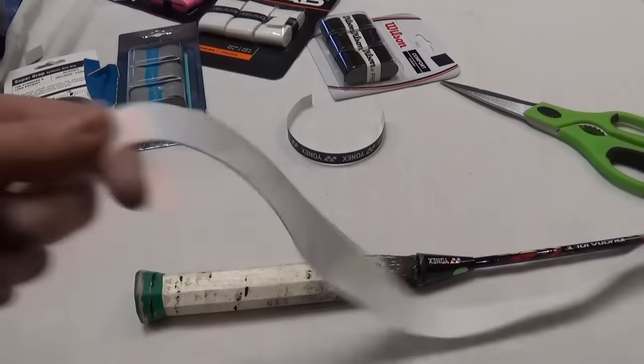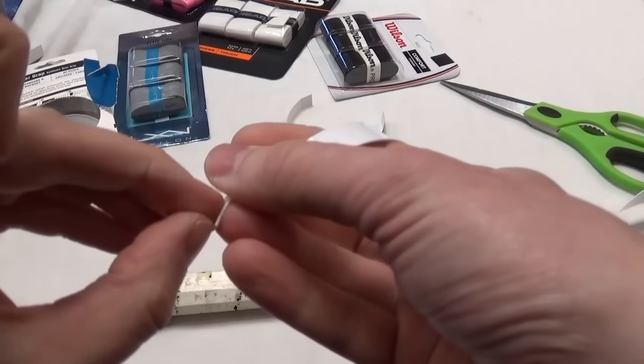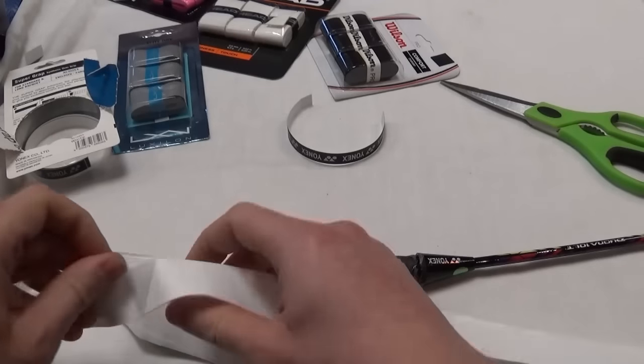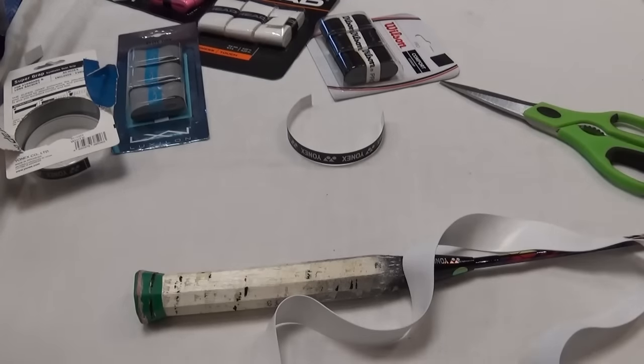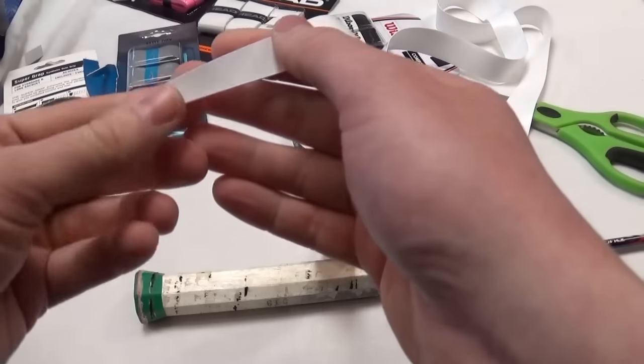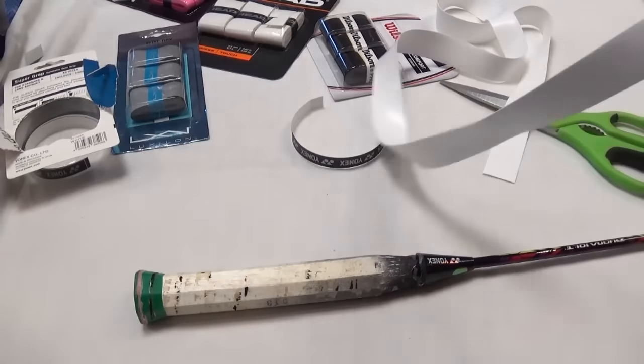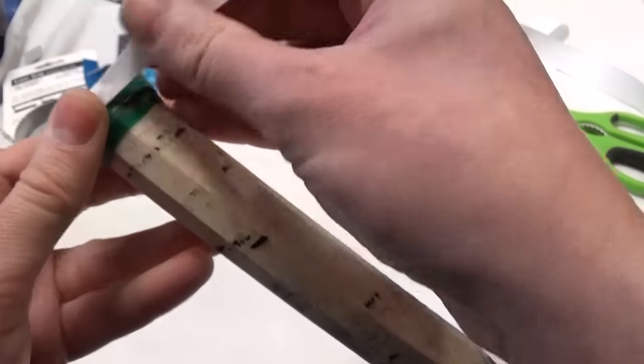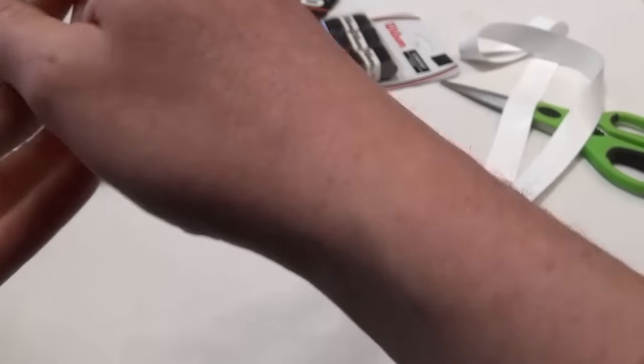Now I've seen a lot of the Chinese players that I play with do this and the benefit of putting the over grip straight on the handle is that it keeps the grip nice and thin. Keeping your grip thin is really good for helping you generate power because it helps you turn the racket in your hand and generate a lot of racket head speed.